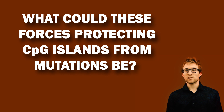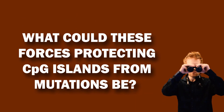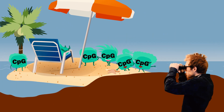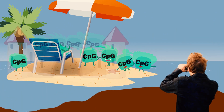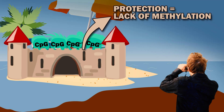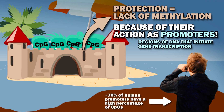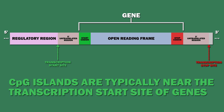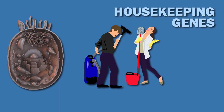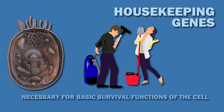But what could these forces protecting CpG islands from mutations be? Evidence suggests that CpG islands — the CpG-rich areas that have survived through evolutionary time — tend to be protected by remaining unmethylated because of their action as promoters, regions of DNA that initiate gene transcription. Around 70% of human promoters have a high percentage of CpGs, and they are the most common promoter type in the vertebrate genome. CpG islands are typically near the transcription start site of genes, and are especially common near the transcription start site of housekeeping genes in vertebrates. Housekeeping genes are genes necessary for basic survival functions of the cell, and are hence found throughout all cells.